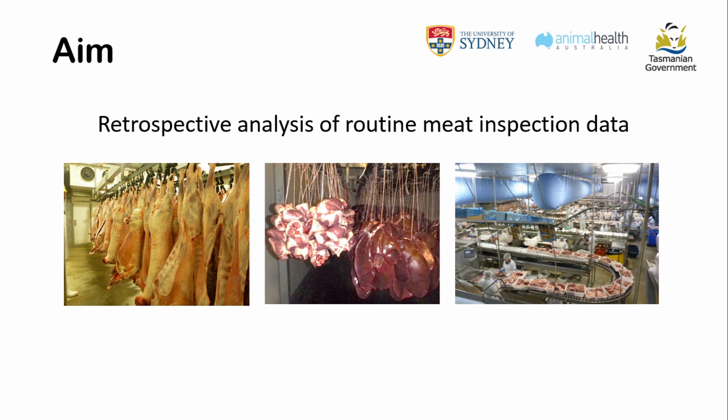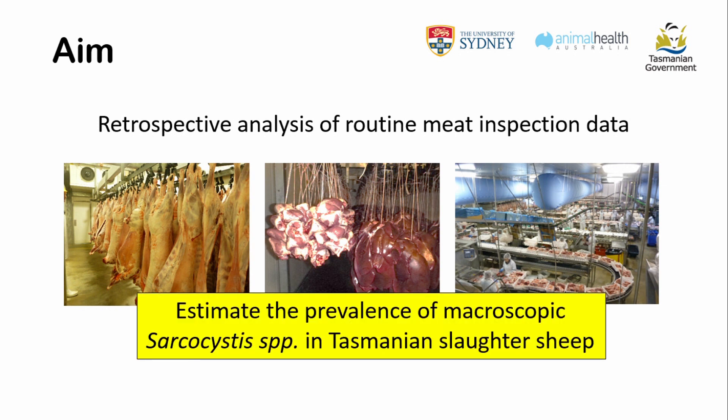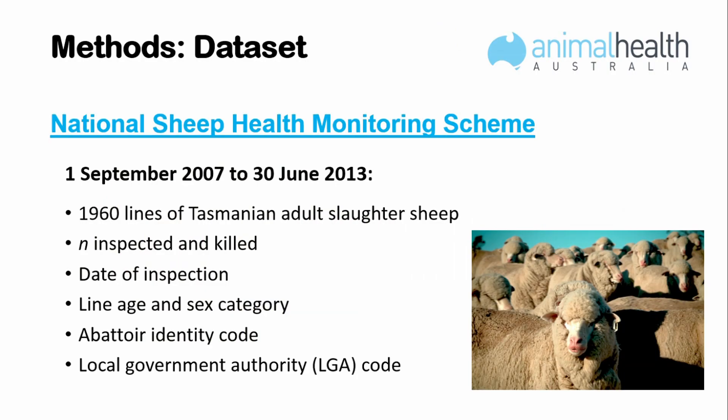The aim here was very simple: to use retrospective analysis of routinely collected post-mortem meat inspection data to estimate the prevalence of macroscopic lesions. Animal Health Australia maintains the National Sheep Health Monitoring Scheme, which has been in place since 2009 and offers a system where all abattoirs across Australia record specific endemic diseases of sheep, including sarcocystis, caseous lymphadenitis, and paratuberculosis.